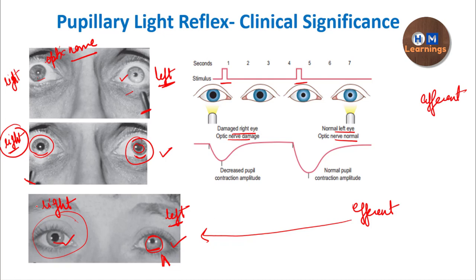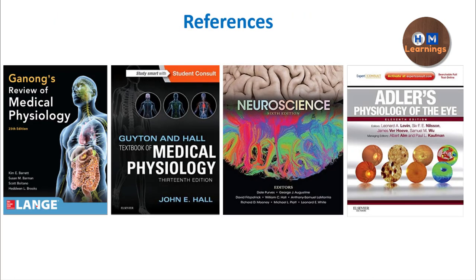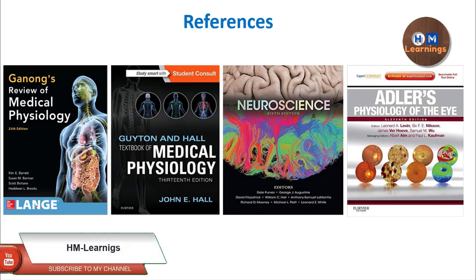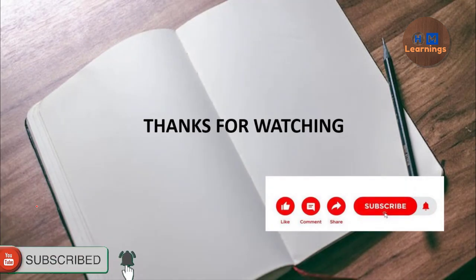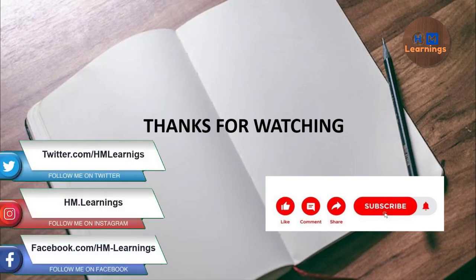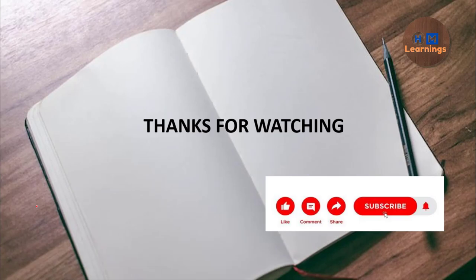Another thing is the pretectal nucleus damage, which is the Argyll Robertson pupil — that thing is already discussed in one of the videos on Autonomic Nervous System, which you can watch. I will also tag it in the description box. These are the references I have referred — if you want to learn more, you can go and read these books. We are at the end of this video. I hope you enjoyed it. If you like this video and it adds value in your knowledge, please like, share and subscribe to our channel and help us grow more. Thank you and keep learning.